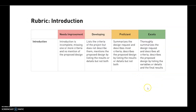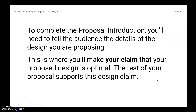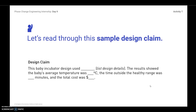Let's look at a large version of the rubric together. Right here is what you want to focus on. To complete the proposal introduction, you'll need to tell the audience the details of the design you are proposing. This is where you'll make your claim that this proposed design is optimal, and the rest of your proposal supports this claim. Let's read through this example design claim: 'This baby incubator design used [list your details]. The results show that the baby's average temperature was [temperature], the time outside of the healthy range was [minutes], and the total cost was [amount].' This is an example of a design claim that you would fill in for your specific design.